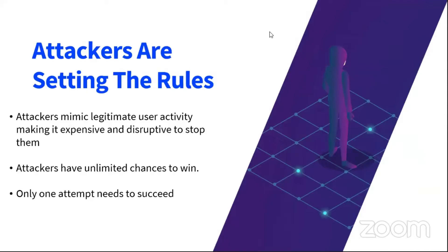Let's talk about what the attacker strategy looks like. First, attackers typically mimic legitimate user activity. They try to impersonate a user, social engineer a user. They do so because they understand that defenders will always need to allow users access to data, and therefore it will always be difficult and expensive to stop them if they do a good enough job of looking like a legitimate user. The second thing attackers do is ensure that when they run attacks, they do so in a manner that's anonymous — where even if they are detected, there is no penalty. A simple way is to be physically located in a jurisdiction where you will not be prosecuted should you be caught.